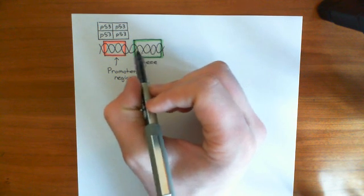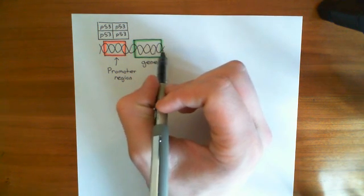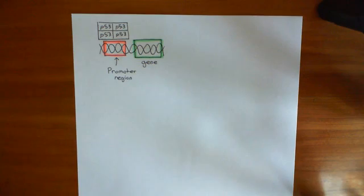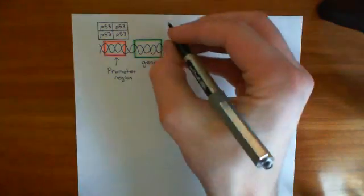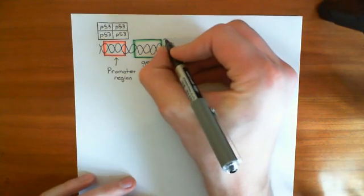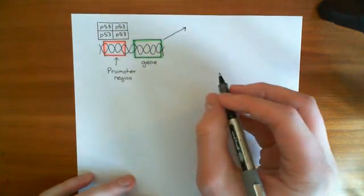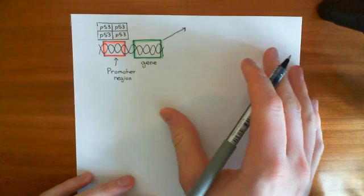So RNA polymerase will come and bind more often and therefore you'll get more transcription of the gene. If you get more transcription of the gene, you'll get more mRNA and if you get more mRNA, it follows you'll get more translation of the protein. So it's going to increase the expression of certain genes. Now, basically, there are many genes that are increased in expression by P53. They have their expression increased by P53.